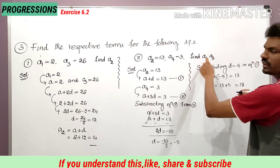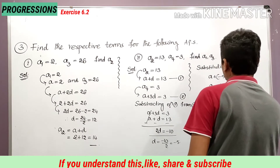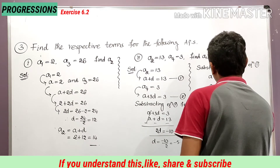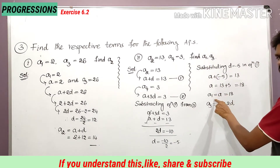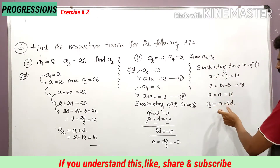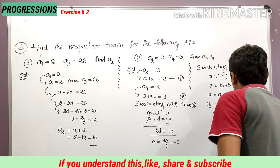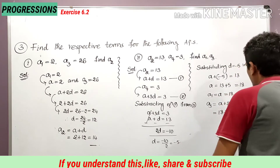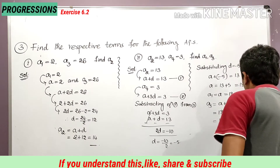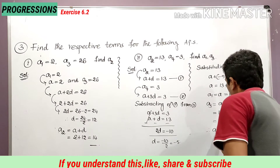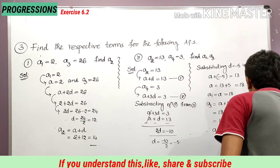We now have a and d values. a1 is equal to a itself, which is 18. a3 is equal to a plus 2d. Substituting: 18 plus 2 into (minus 5) is 18 minus 10, which equals 8. Therefore a1 is equal to 18 and a3 is equal to 8.